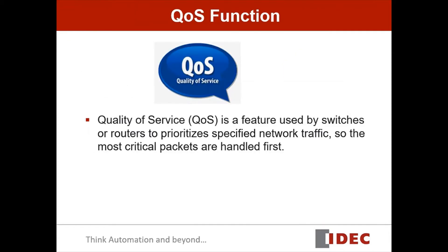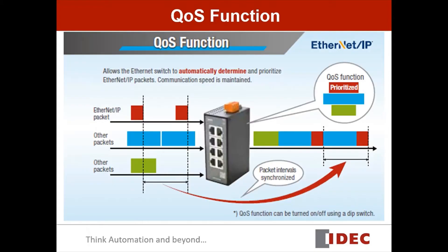QoS stands for Quality of Service. It's a feature used by switches or routers to prioritize specific network traffic, so the most critical packets are handled first. The main benefit of using the QoS function in our 8-Port Ethernet Switch is that it prioritizes Ethernet IP packets. In this example, the Ethernet IP packets and other packets such as video and audio are connected to the switch. By enabling QoS on the switch, the Ethernet IP packets will be sent before other packets.